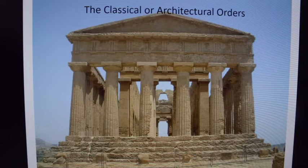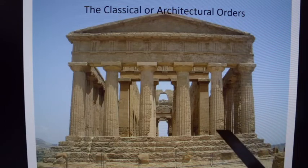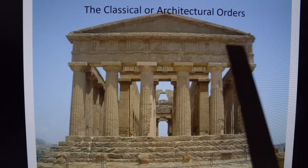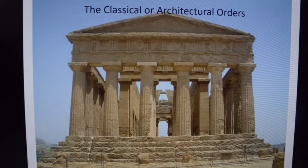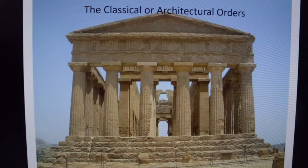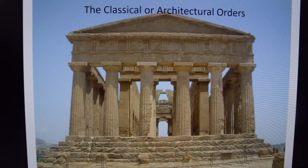Now we look at this temple building, and instead of saying post, now we can say columns, and still the lintels. In addition, we have a lot of decorative things like metopes up here. This is not strictly an architecture class — this is just an overview. So you don't have to know too many of the technical terms, but just know it's the Greeks who are the founders. I want to talk about the classical or architectural orders today.